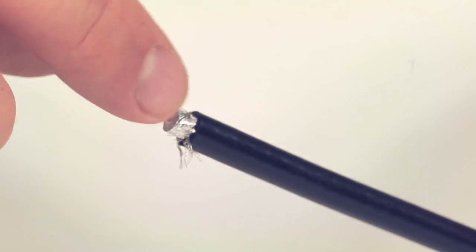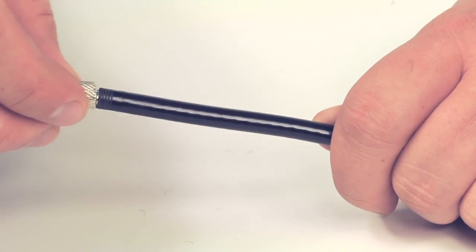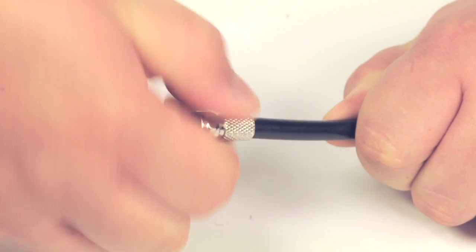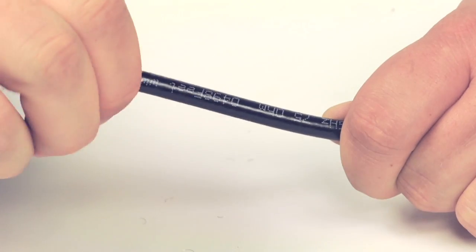Pull back the braided shield and begin to insert the connector. Simply push the connector onto the cable, apply pressure and twist to make contact with the cable and complete termination.